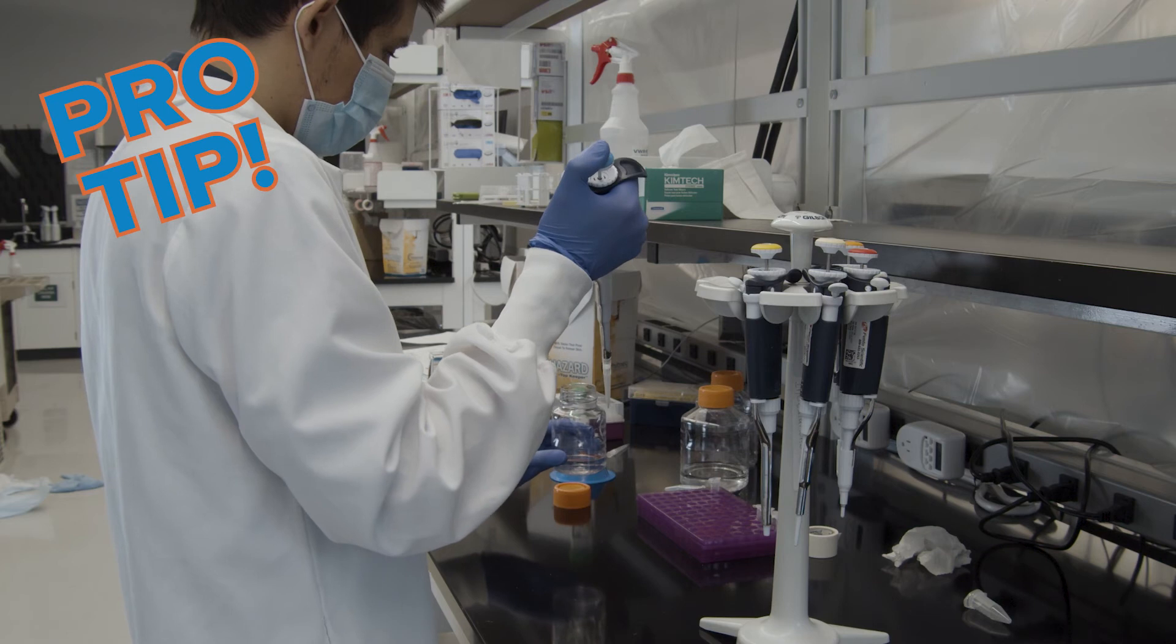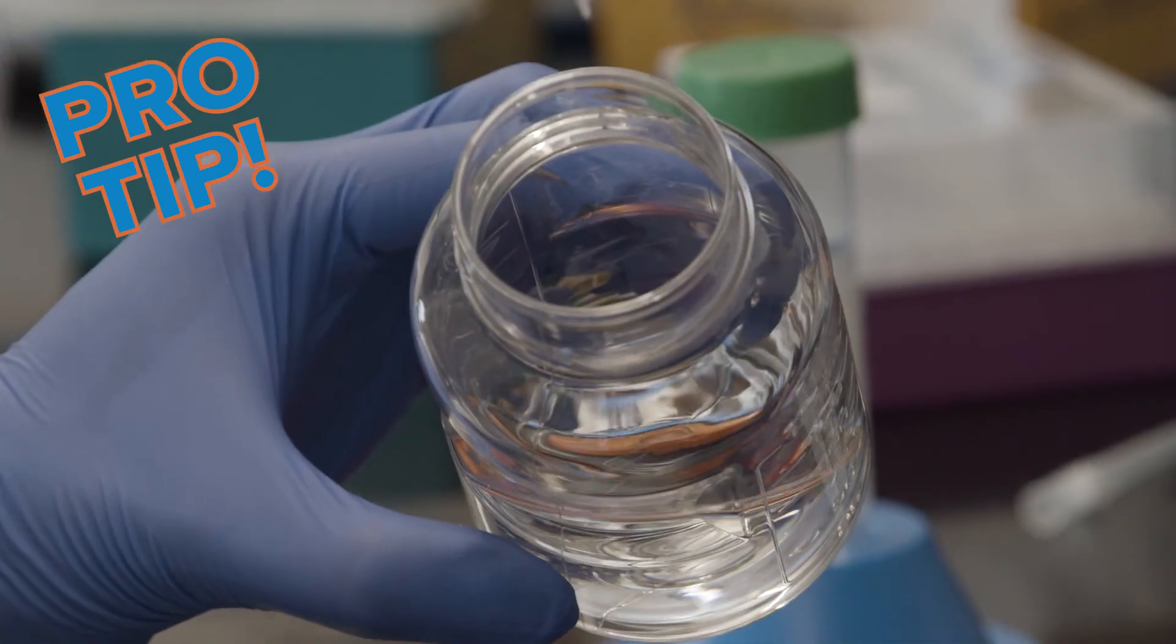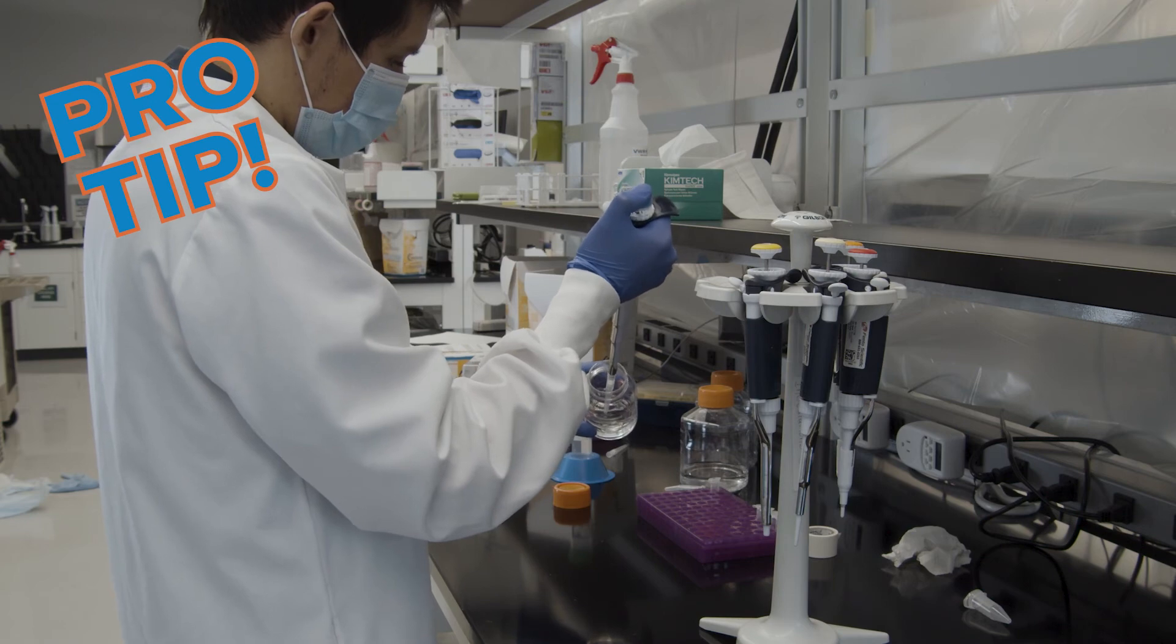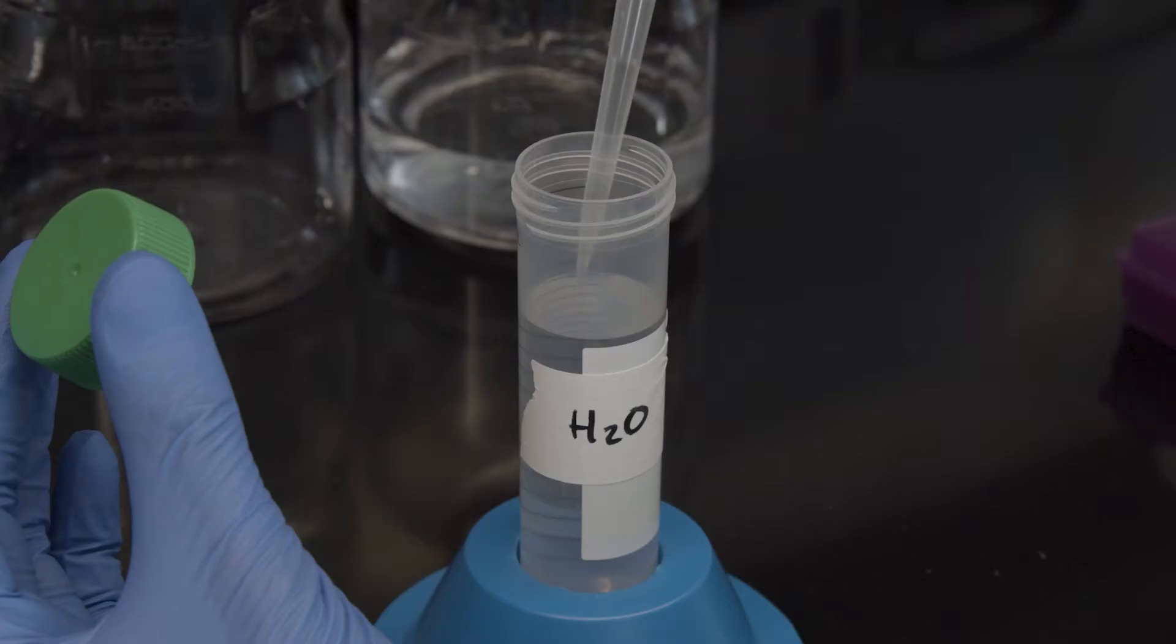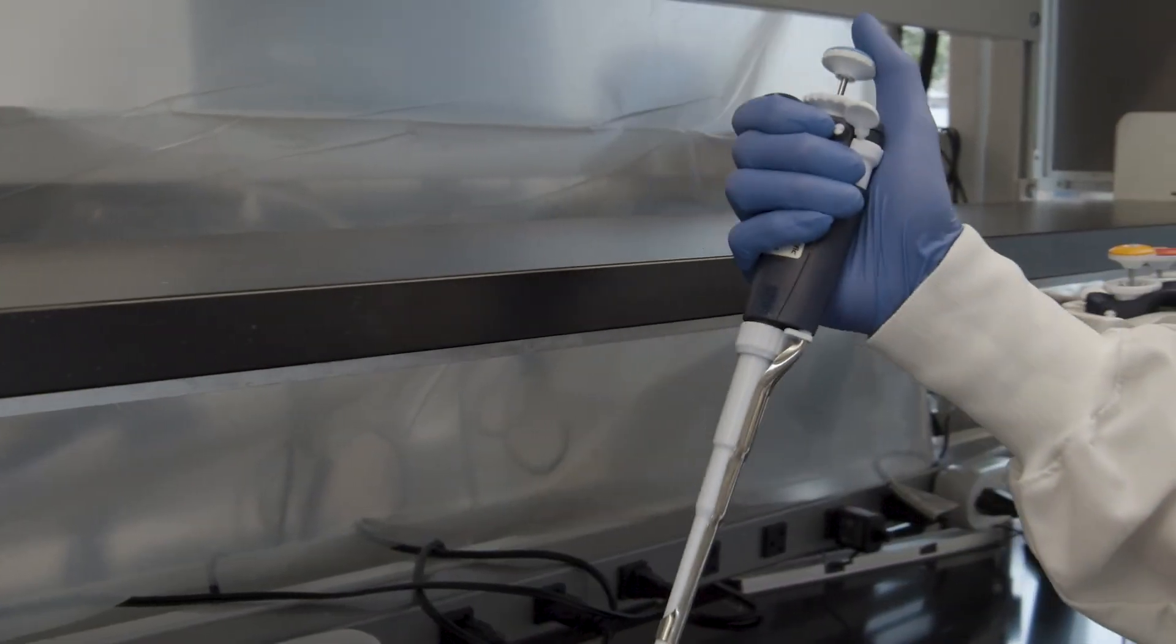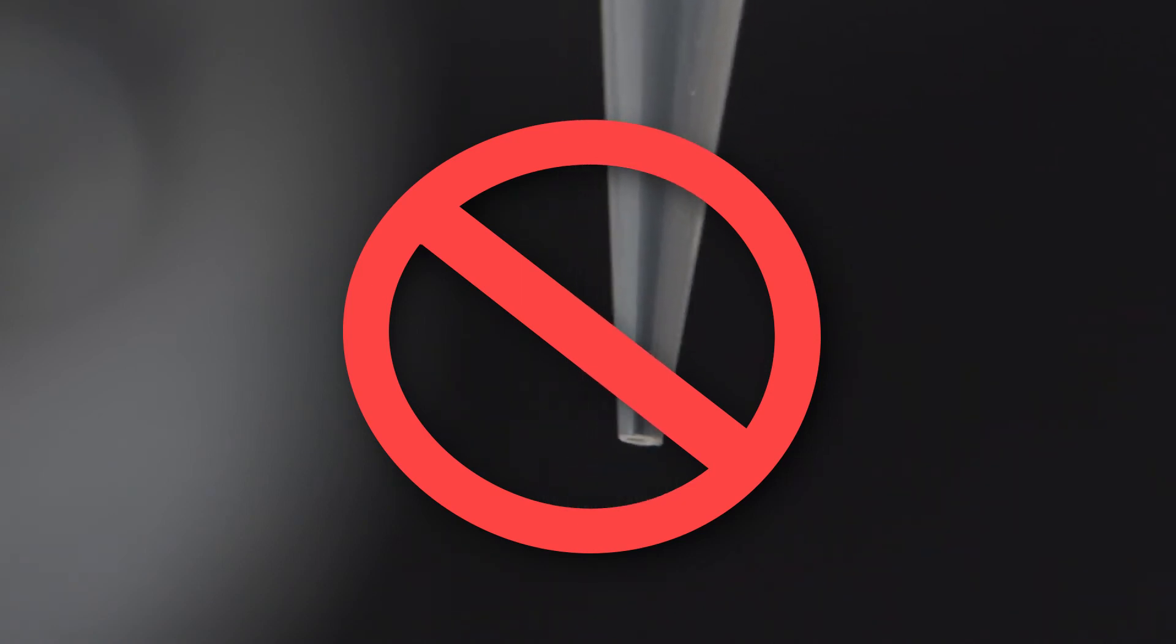If you're pipetting from a relatively large container holding a small amount of liquid, tilt the container so it's easier to reach the liquid. Once the liquid is finished drawing into the pipette tip, lift the pipette so that the tip exits the liquid. When you're lifting the pipette tip from the liquid, no liquid should drip from the tip. If it does, this could indicate the tip is not properly seated on the pipette.